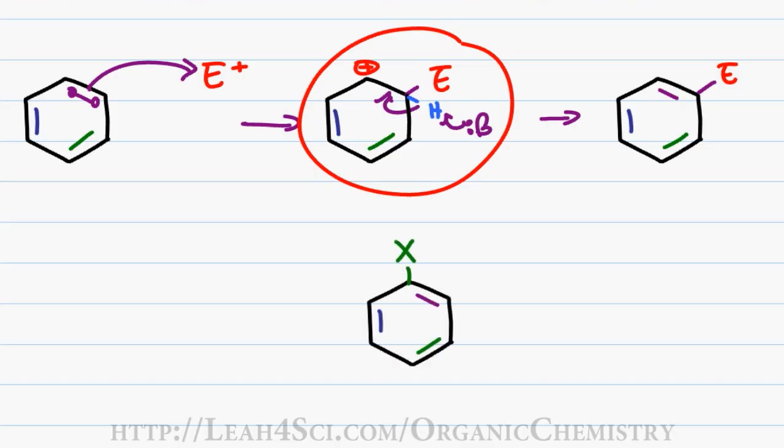Say I wanted to go through this reaction where I have a substituent, a green X that does not represent a halogen, rather any substituent. The question is, would I add the electrophile at the ortho, meta or para positions? If you're not comfortable with these classifications, go back and watch the video that explains the ortho, meta, para monster.